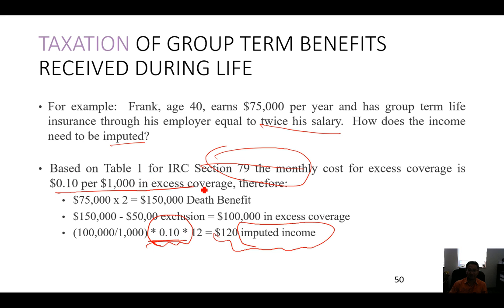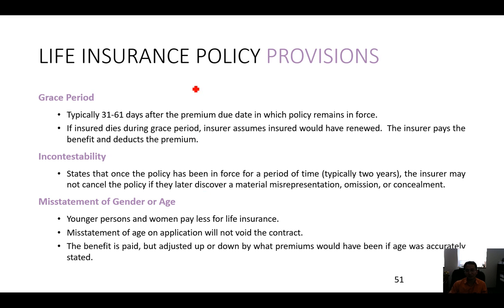The IRS Internal Revenue Code tells you what the cost of life insurance coverage is — for instance, 10 cents per $1,000. Regarding grace period: if you cannot make a premium payment on time, you have around one to two months. If the person died during the grace period, you should assume the insured will have renewed the policy.